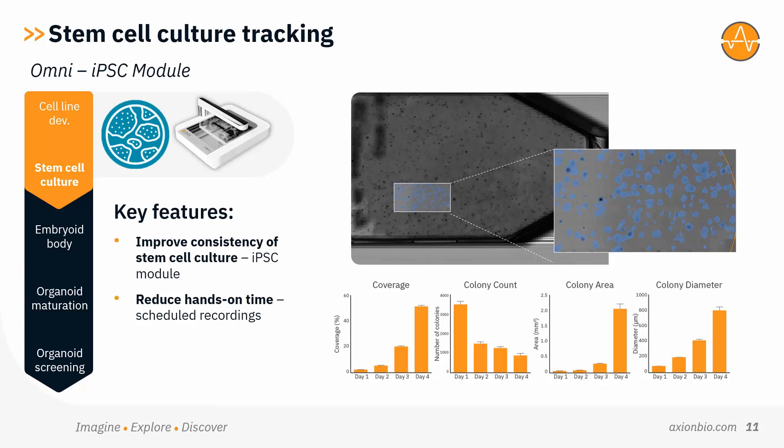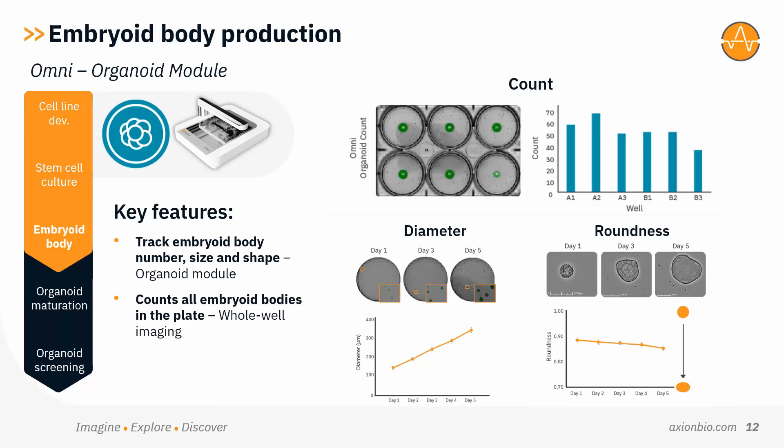The quality of your stem cell culture going into your differentiation will have a major impact on the quality of the resulting cells. Monitoring stem cell culture proliferation can be very time-consuming and subjective. Are your cultures growing as fast as previous cultures? Is the culture at 50% or 60% confluency? Will you need to passage the cells on Sunday or can you do it on Monday? The new iPSC module on the Omni takes all the guesswork off the table, helping you improve the consistency of your iPSC culture. The organoid module on the Omni can help standardize the embryoid body formation and expansion process — a critical step in organoid production — tracking features including diameter, roundness, and number in the well.